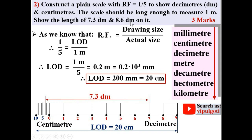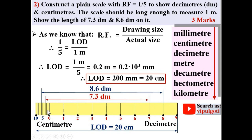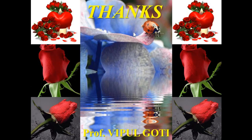Now to show 8.6 decimeters, that means 8 decimeters and 6 centimeters. Locate 8 on the decimeter scale, then count 0, 1, 2, 3, 4, 5, 6 on the centimeter side. This distance represents 8.6 decimeters — 8 decimeters and 6 centimeters. The yellow color used here represents the scale measurement but is not required in the examination. Thanks, dear friends — press the like button to appreciate this video.